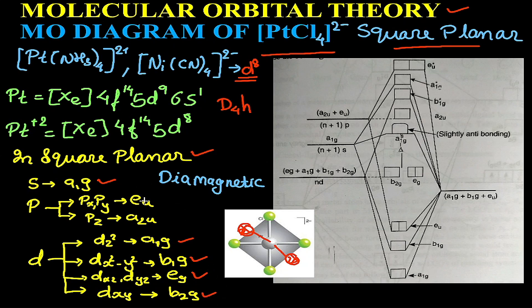Now, out of seven orbitals, ligand group orbitals are a1g, b1g, and eu. So these three orbitals—a1g, eu, and b1g—we have two a1g's in metal.